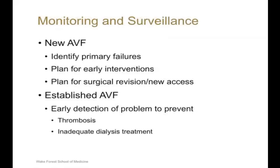I am going to discuss primarily monitoring and surveillance as relevant to arteriovenous fistula. Primary failures account for 40% to 60% of fistulas created in the United States. The relevance of monitoring for new AV fistula helps in identifying primary non-maturing accesses, planning early interventions for fistulas that are not maturing, and planning for early surgical interventions or placement of new access in a timely manner to reduce catheter duration. For established AV fistulas, early detection of problems helps in preventing thrombosis and preventing inadequate dialysis treatment on a chronic basis.